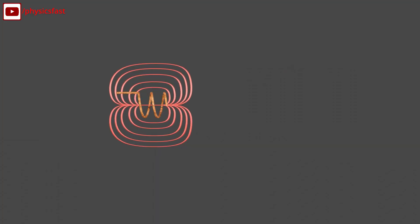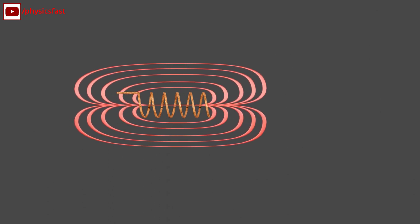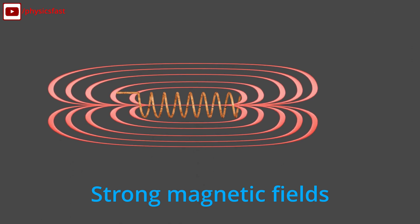As the turns of the current loop increases, the magnetic field generated also increases. That is, a strong magnetic field is created.